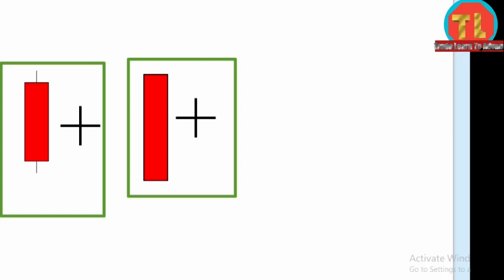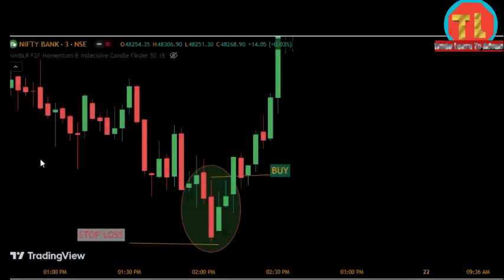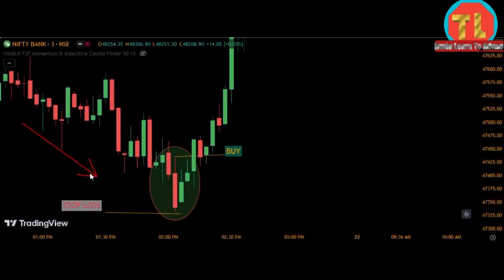So friends, let us understand how this candlestick pattern is formed in a chart. You can see a downtrend in the chart, followed by this pattern at the bottom of the chart. After this pattern is formed...